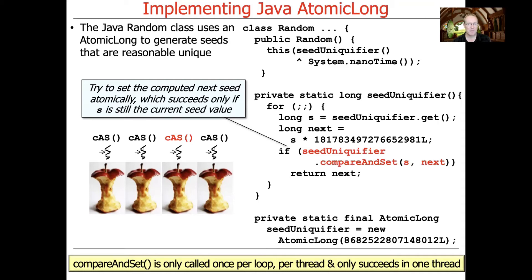And so what's happening there is we're trying to see if we can atomically make this work without having to worry about side effects from other threads that are being called at the same time. And notice how compareAndSet is only called once per loop per thread and will only succeed in one thread. So all the other threads that call will get, they will fail because their version of S will not be equal to what the version was when they did the original get because we were atomically updating it.